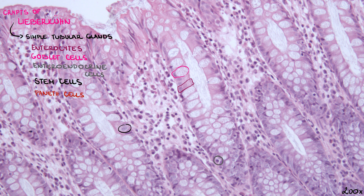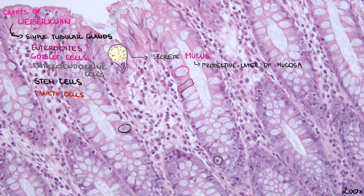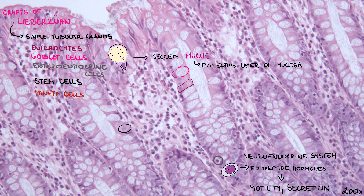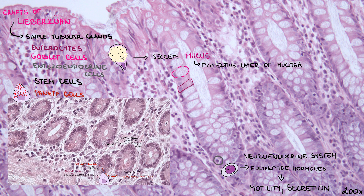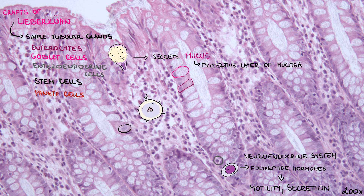Goblet cells are rather common in the large intestine, and they become even more numerous as the large intestine reaches its last segment, the rectum. These cells secrete mucus, which serves as a protective layer of the mucosa. Enteroendocrine cells belong to the neuroendocrine system and produce polypeptide hormones which influence motility and secretion of the intestine. Paneth cells, in comparison to the small intestine, are less numerous and cannot easily be distinguished in this section. Stem cells with light, active nuclei give rise to all aforementioned cell types.